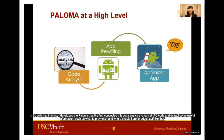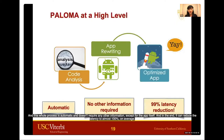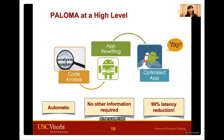With that in mind, I developed Paloma, which first conducts code analysis to look at the app's code and extract useful information — such as what to prefetch and when to prefetch. Based on that, Paloma automatically rewrites the app and produces an optimized app that looks the same as the original but has prefetching enabled. This whole process is automatic and requires no other information except the app itself. In the end, it can reduce latency by almost 100% on average.